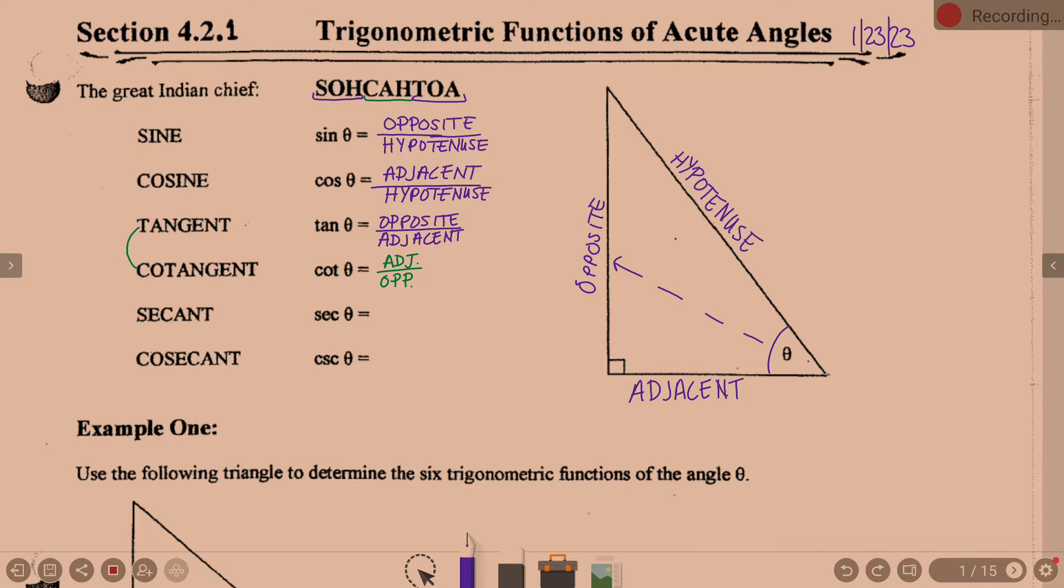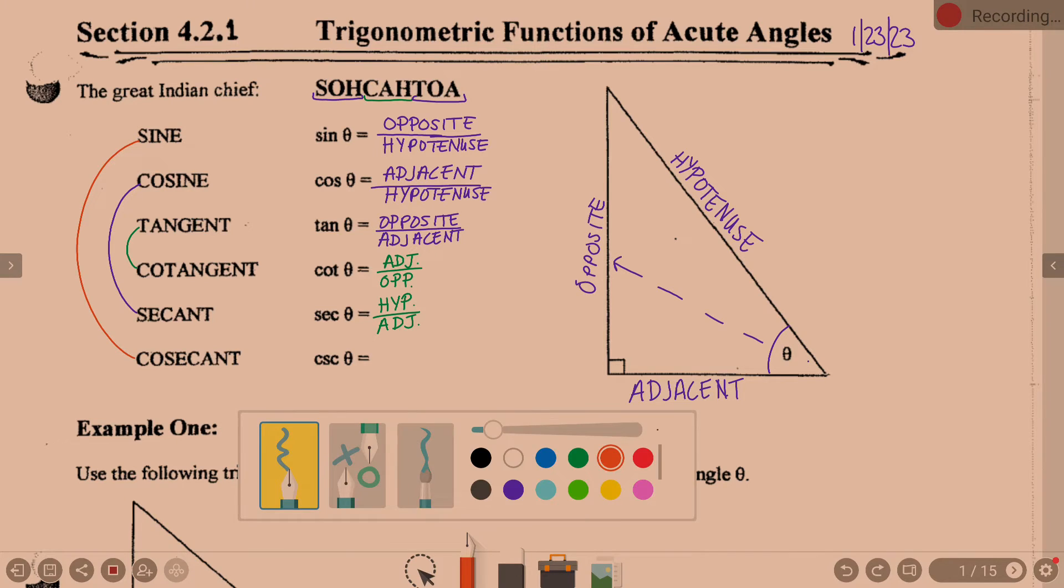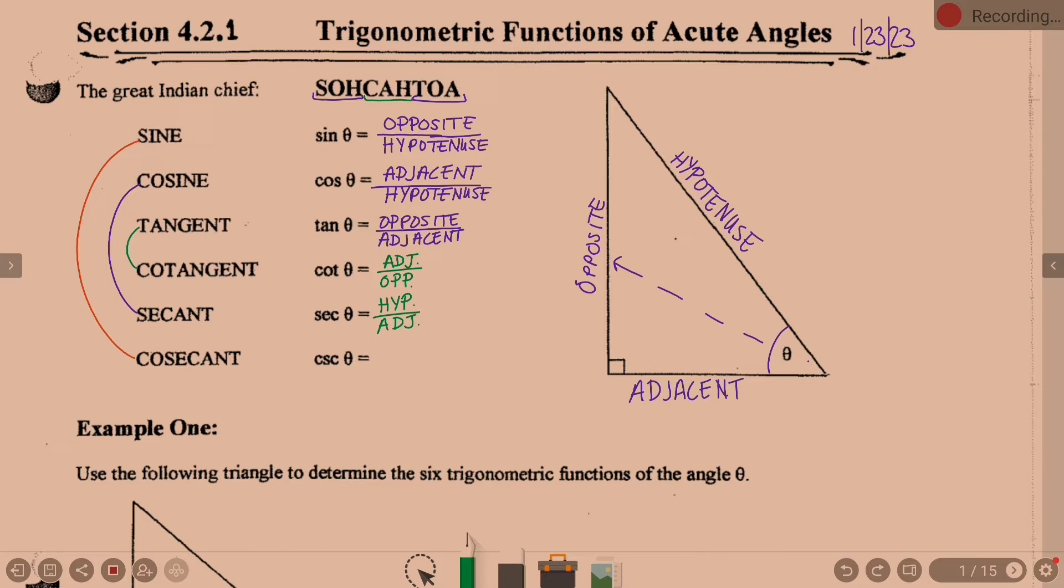Now, now it gets less obvious. You have to mix and match here. Now, secant is the reciprocal of cosine. So if cosine is adjacent over hypotenuse, secant is hypotenuse over adjacent. And then that means in the end, what about cosecant? It is the reciprocal of sine. So if sine is opposite over hypotenuse, cosecant is hypotenuse over opposite.